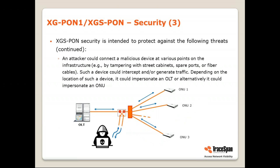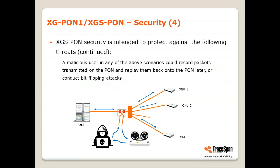The third risk is that the same or a different malicious user would connect somewhere on the PON and be able to both sniff the traffic on the PON and inject or generate traffic back into the PON. The fourth risk is similar to the previous three, but here they also added the element of recording the packets — the user records traffic from the PON and then after some time injects it back into the PON.